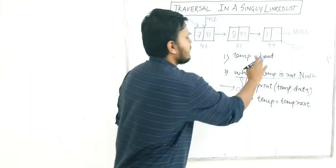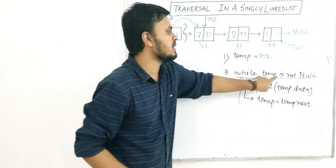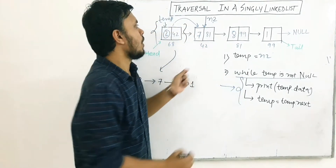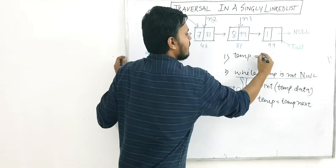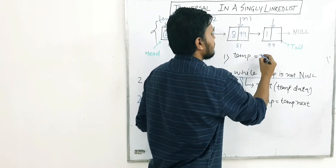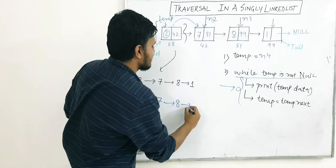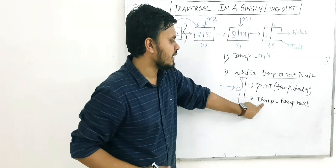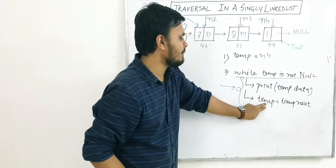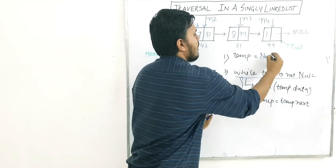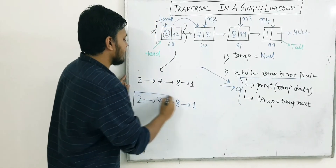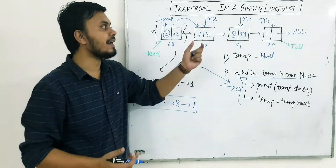Now temp is N2, which is not null, so we print 7. Then temp becomes N3 and we print 8. Then temp becomes N4 and we print 1. Now temp = temp.next, but N4's address pointer is pointing to null, so temp becomes null. The loop condition is now false, we exit the loop, and that is how traversal works in a singly linked list.